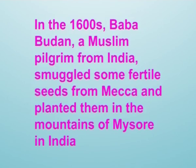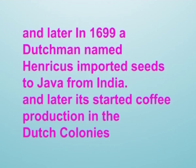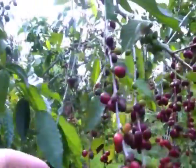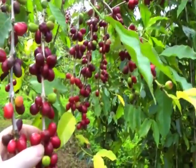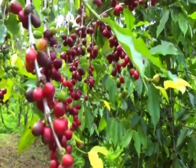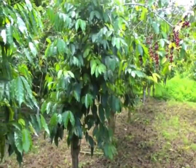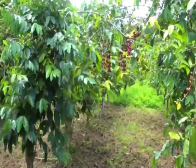In the 1600s, Baba Budan, a Muslim pilgrim from India, smuggled some fertile seeds from Mecca and planted them in the mountains of Mysore in India. Later, in 1699, a Dutchman named Enricus imported seeds to Java from India and started coffee production in the Dutch colonies. From there, coffee seeds and plants were sent to the Botanical Conservatory in Amsterdam, where they were cultivated, propagated, and sent to many conservatories throughout Europe.